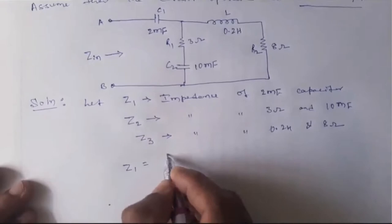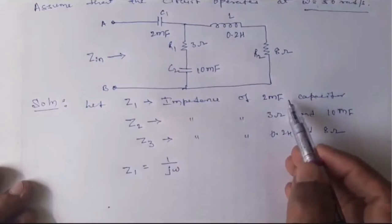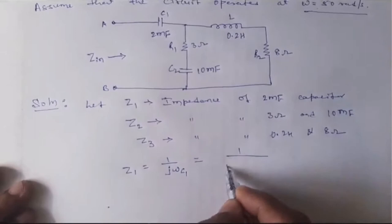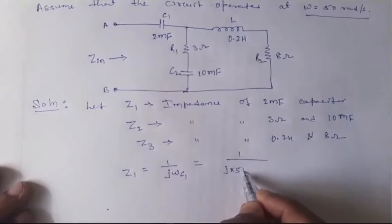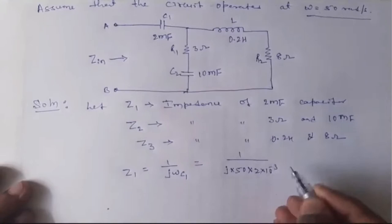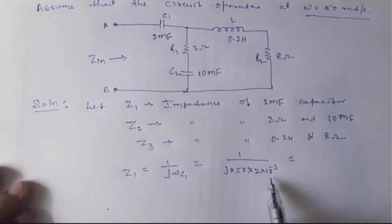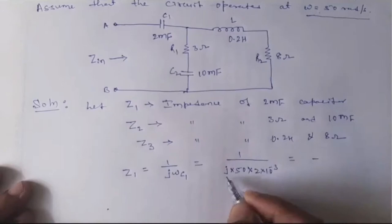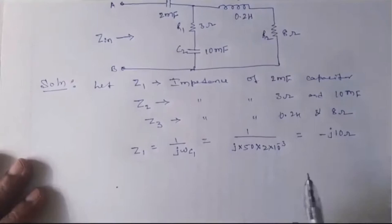Z1 can be calculated as 1 divided by j·ω·C1. This is the impedance of the 2 millifarad capacitor. Substituting omega equals 50 and C1 equals 2 millifarad, which is 2×10⁻³: 1 divided by j×50×2×10⁻³ gives a denominator of 0.1, so Z1 equals minus j10 ohm.